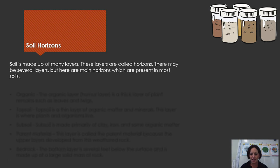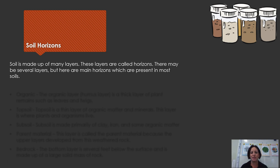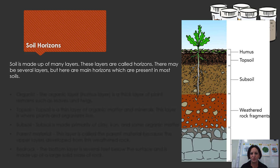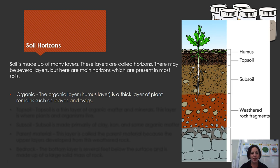Now let's look at the soil layers — what we call the soil horizons. Soils are made up of many many layers called horizons. There might be lots of horizons in some soils, but there are some main ones that are present in most soils.